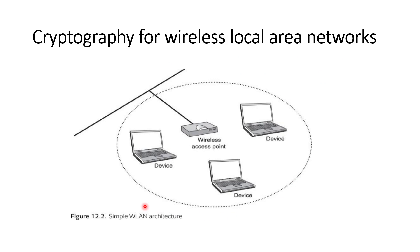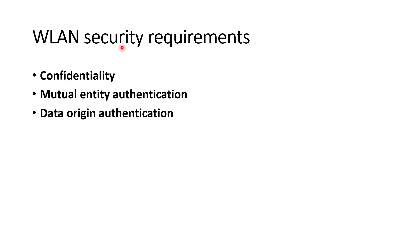This is the simple wireless LAN architecture. It contains multiple devices and a wireless access point — all things you already learned in networking, so I am not going to explain the architecture in detail. Let's go directly to the security requirements. In wireless LAN, the requirements are the same: confidentiality, mutual entity authentication, and data origin authentication.